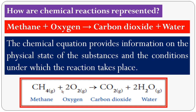Now, balance the equation. There are 4 hydrogens, so you have to put 2 H₂O to balance hydrogen. Now check the oxygen: 2 oxygen on the right from CO₂ and 2 oxygen from 2 H₂O — totally 4 oxygen — so you have to put 2 O₂. Now it is a balanced chemical equation.